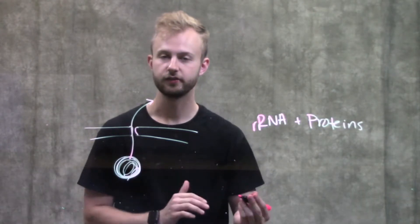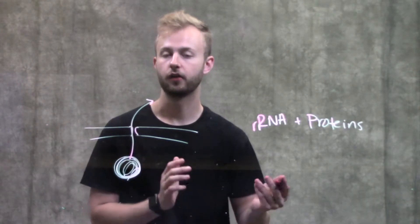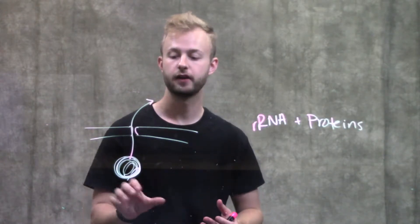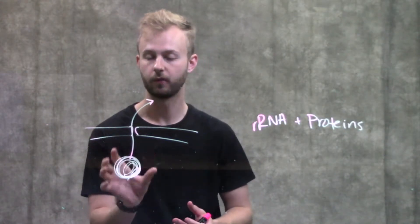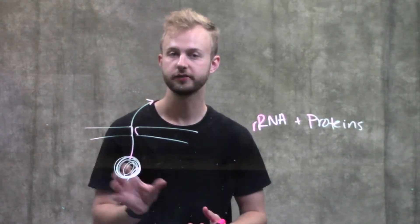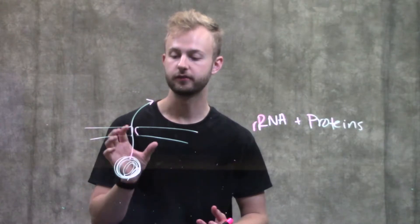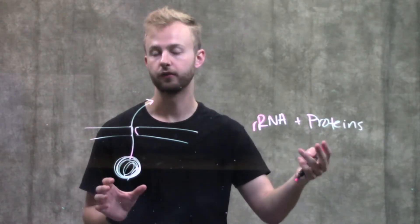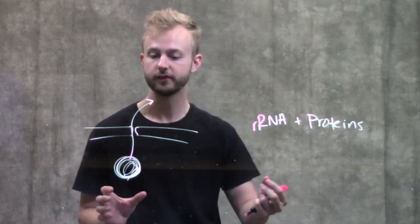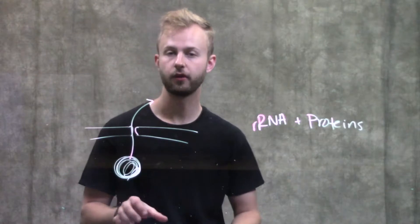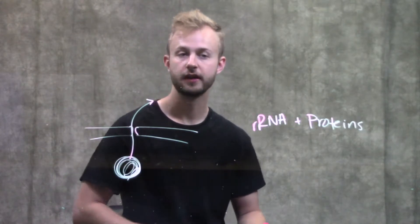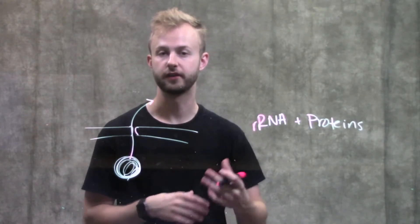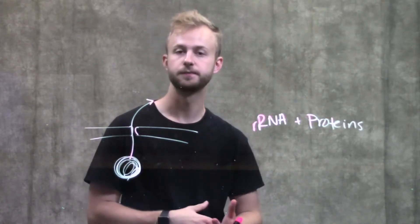In cells that are really active and make lots of proteins, you're going to have a very prominent nucleolus, because the nucleolus is producing a huge part of the ribosomal components. So those cells will have a very prominent nucleolus and a lot of ribosomes.